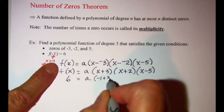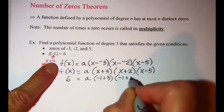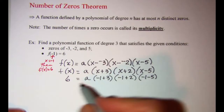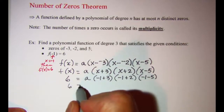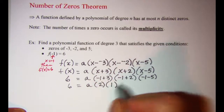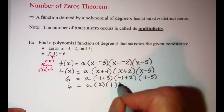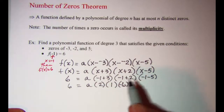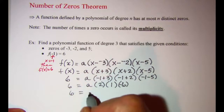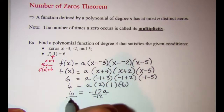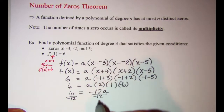Simplifying: negative 1 plus 3 is 2, negative 1 plus 2 is 1, and negative 1 minus 5 is negative 6. So I have 6 equals a times 2 times 1 times negative 6, which gives 6 equals negative 12a. Dividing both sides by negative 12, a equals negative one-half.